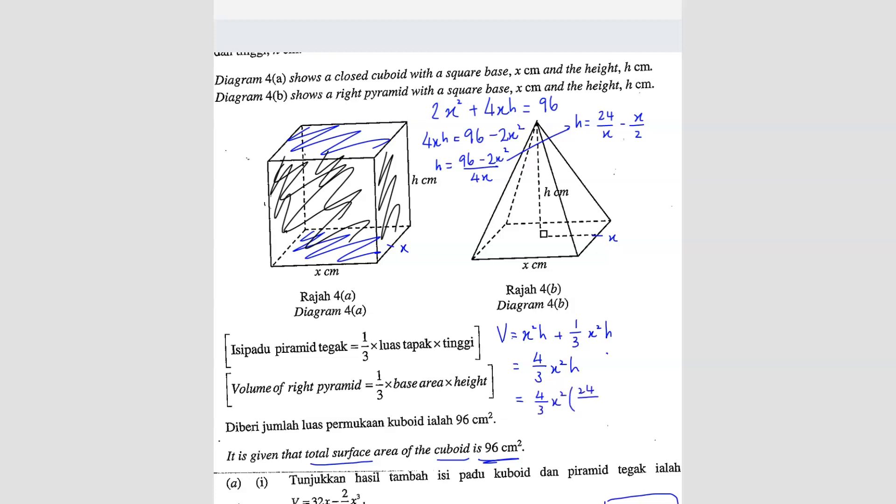So here will be 24 over... sorry, why did I write 24 over 3? It should be 24 over x. So 4/3 times 24, I will get 32. And the x² divided by x, I get x minus... here I will get cube, so it will be 2/3 x³. So this is cm³. This is your answer.